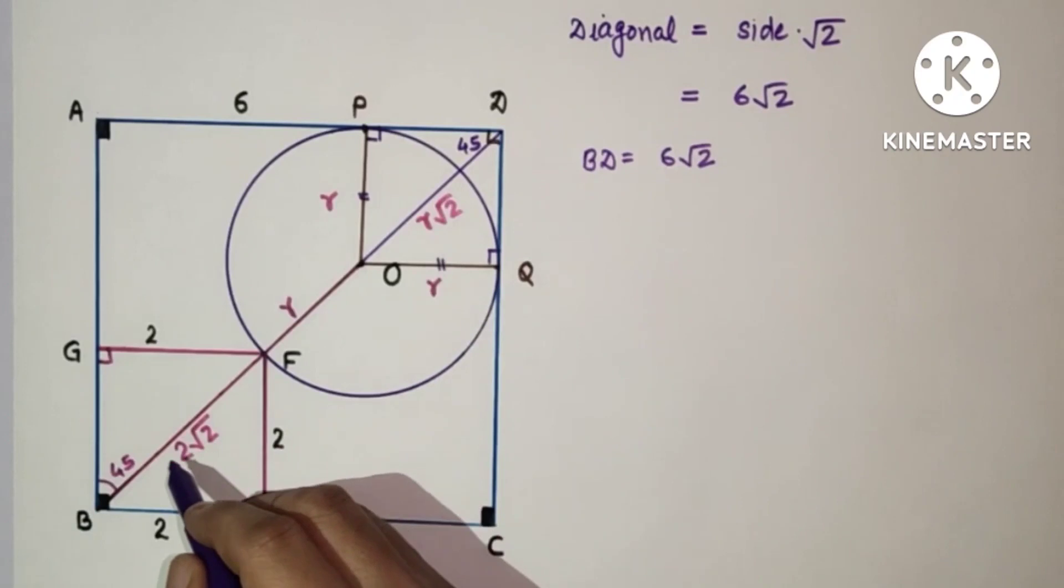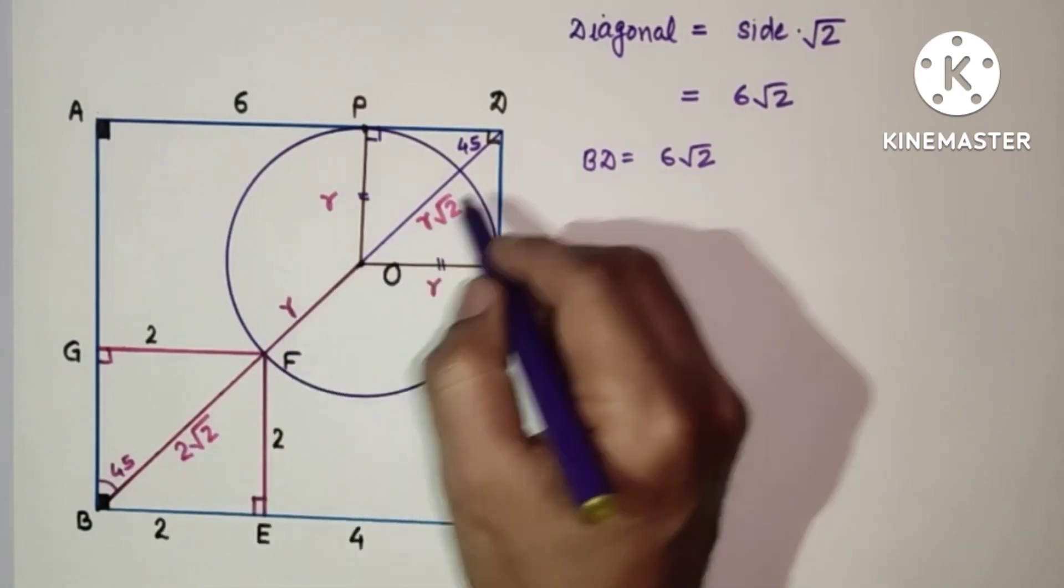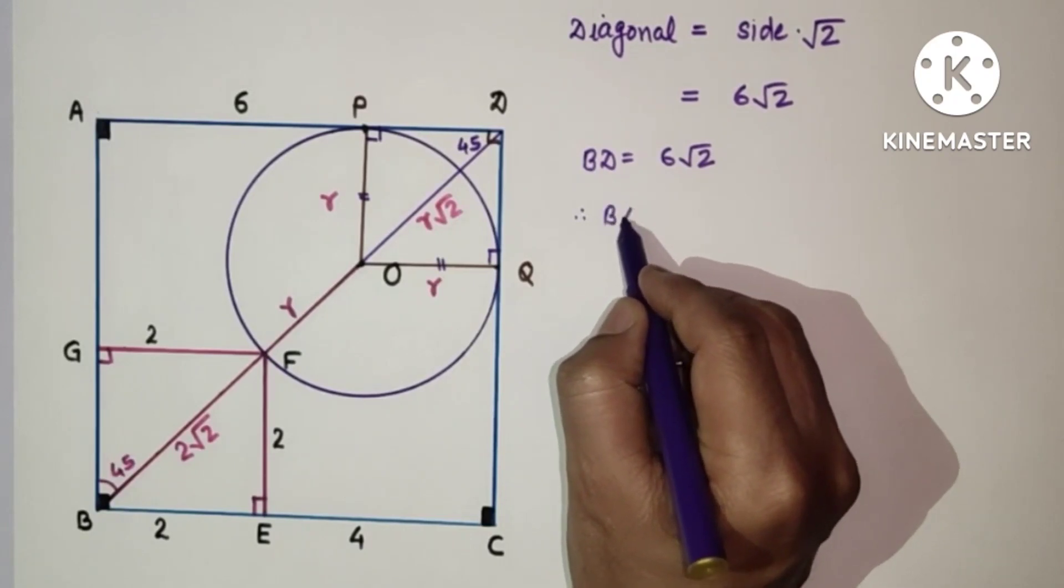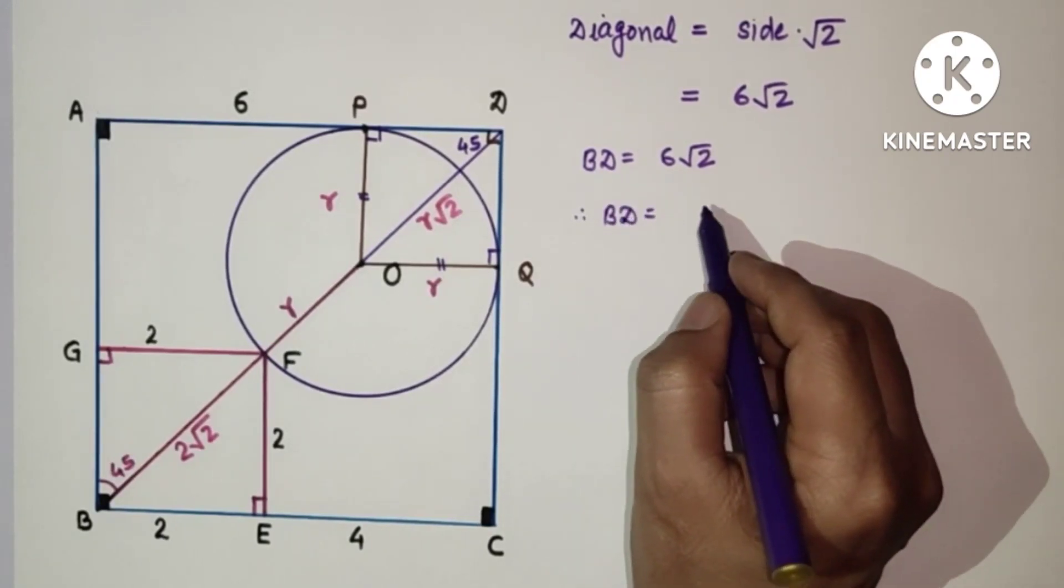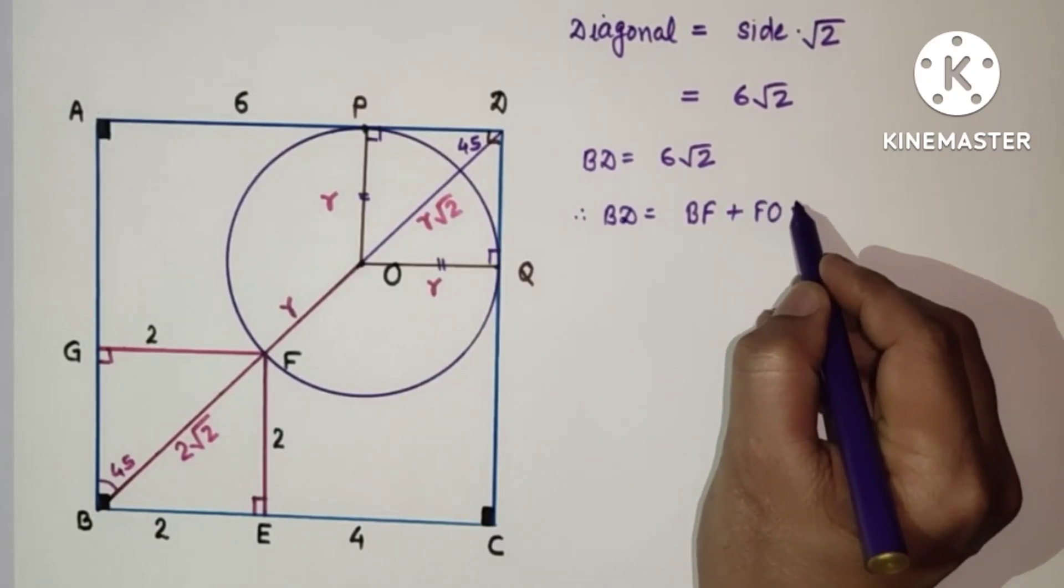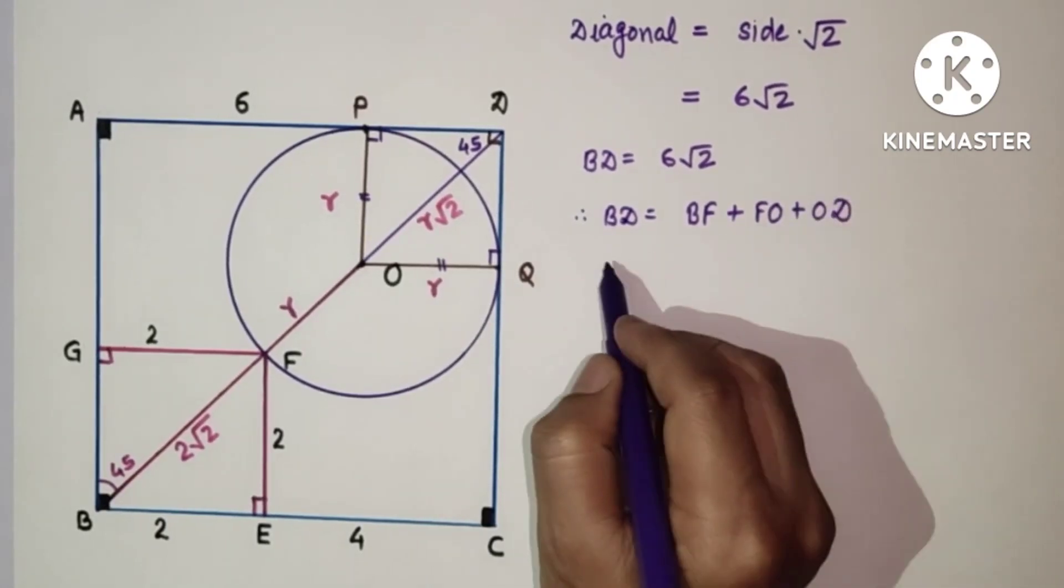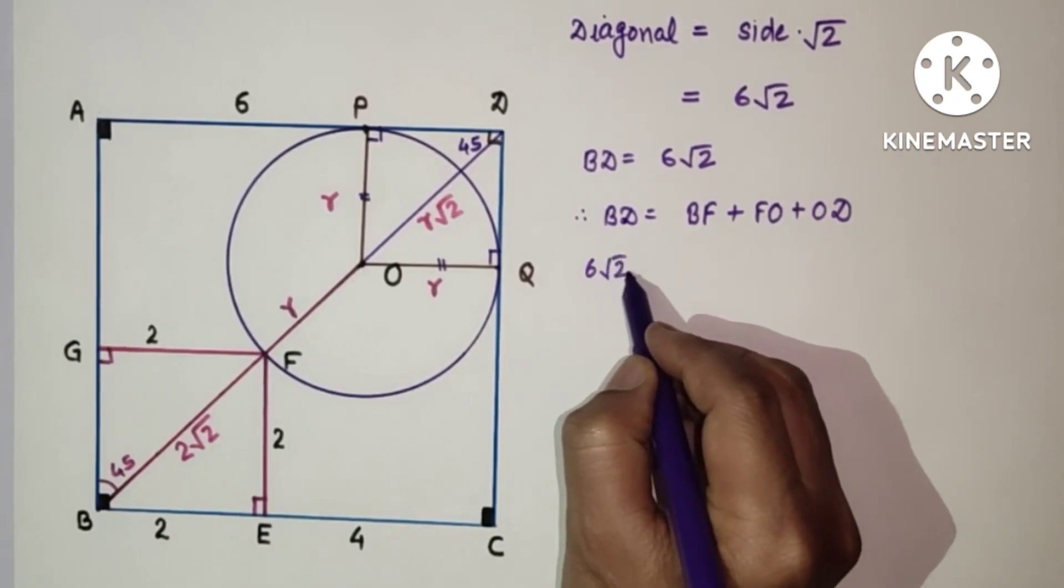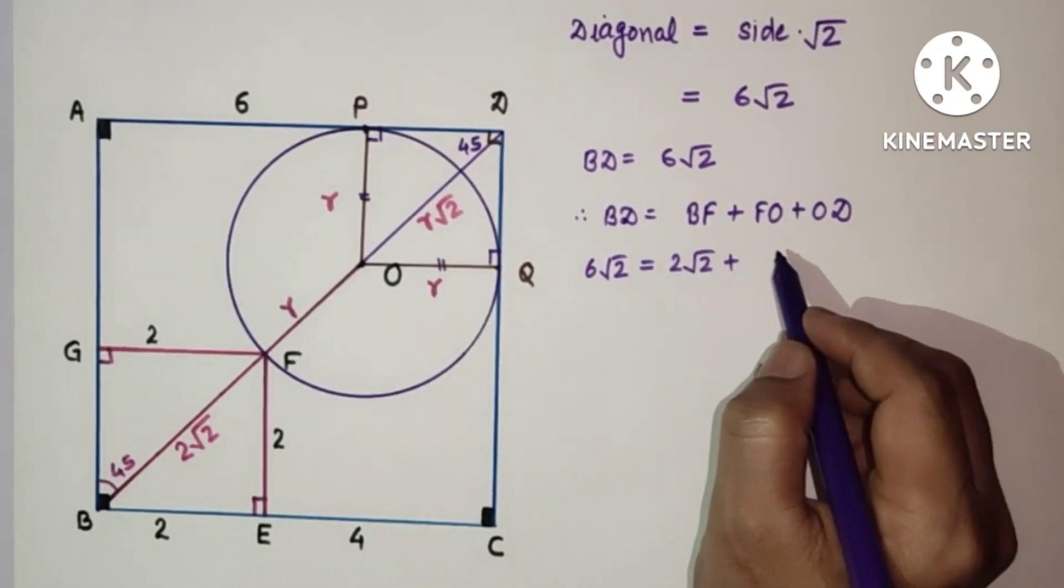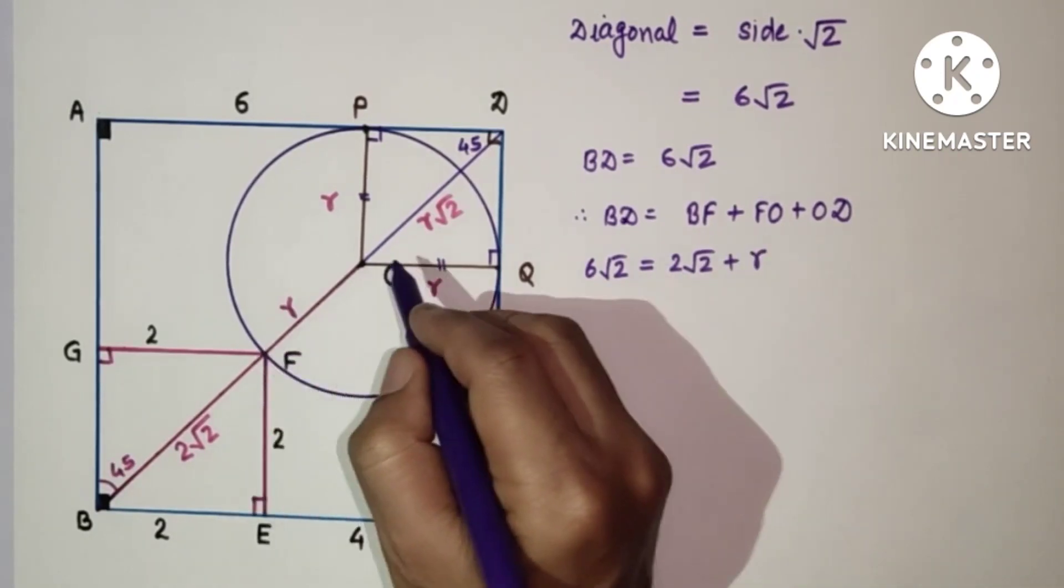And this BD is sum of 2 root 2, R, and R root 2. So therefore BD is equal to BF plus FO plus OD. This is 6 root 2. BF is 2 root 2. FO is R, that is radius. And OD is R root 2.